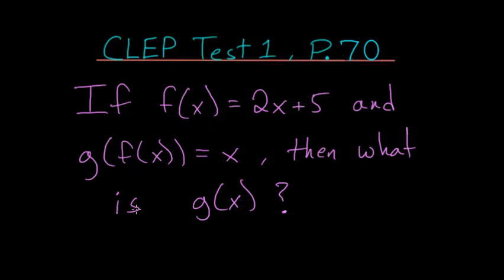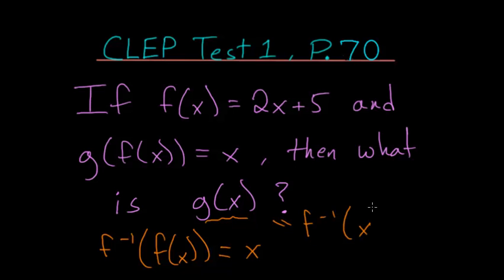It's a property of inverse functions that if we plug a function into its inverse function, we will get back x. So in this case, g of x must be the same thing as the inverse function of x. So we just need to find this function's inverse.